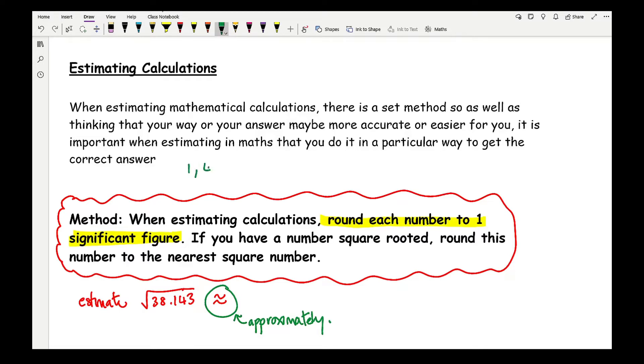From this, what I then want to do is look at my square numbers. So I've got 1, 4, 9, 16, 25, 36, 49. Now this 38.143, the closest square number is going to be 36. So I would estimate that 38.143 is roughly close to the square root of 36, and that is going to be equal to 6. So an estimated answer to the square root of 38.143 is going to be 6.